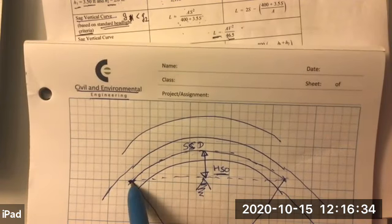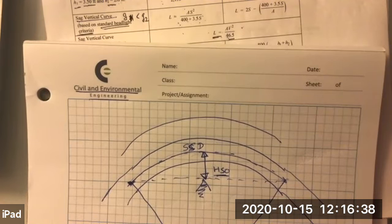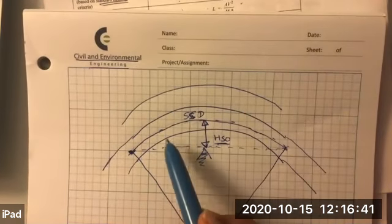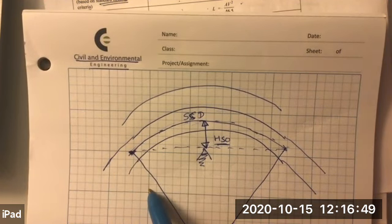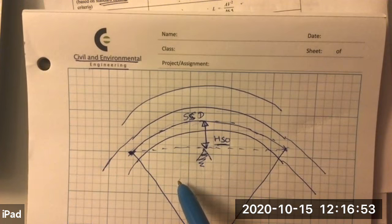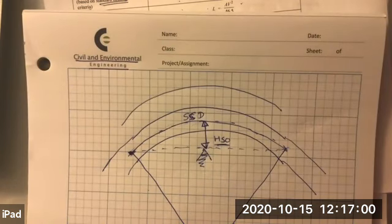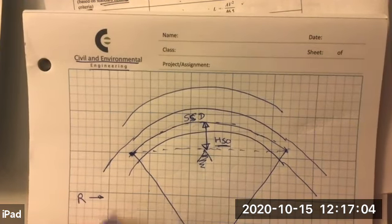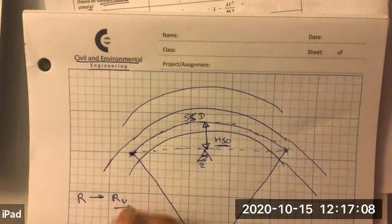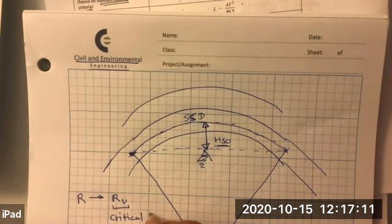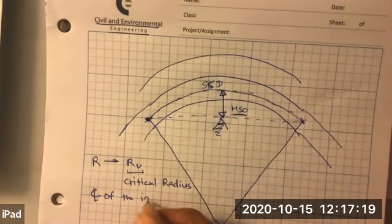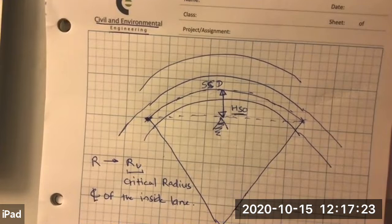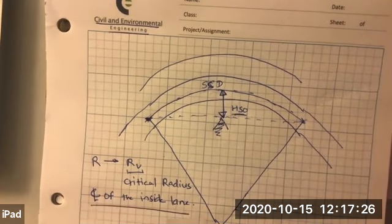This HSO is the critical radius. Sometimes the problem may have multiple lanes instead of a two-lane road — two lanes on one side — and in that case, the radius you use in this formula would be the center line of the innermost lane. In some textbooks you might see R as R sub V, which is the critical radius measured from the center line of the inside lane. We'll work out some examples to make sure we're using that formula correctly.